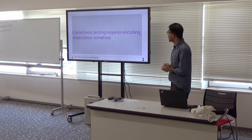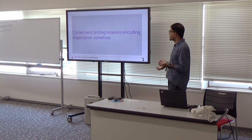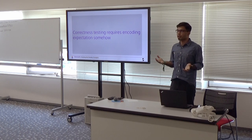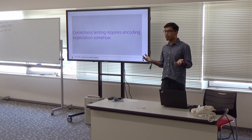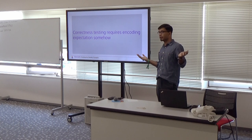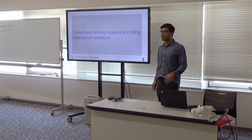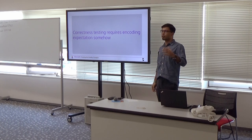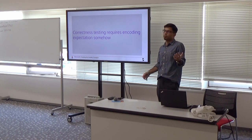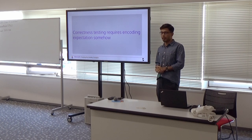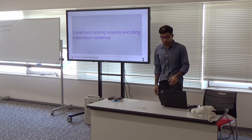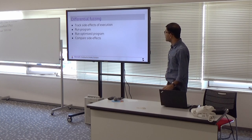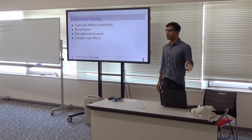But testing the compiler actually requires encoding an expectation somehow. Imagine that you randomly test, randomly create a test program, but you don't know what it's supposed to be doing, what side effects it has. So how do you encode an expectation? What do you check? How do you check that it's doing the right thing?